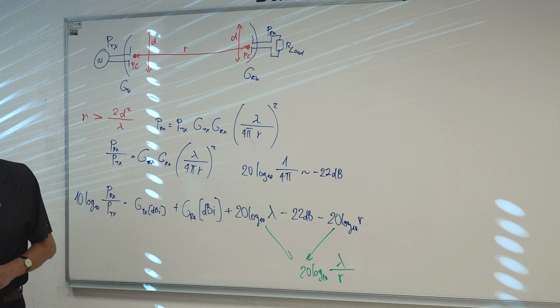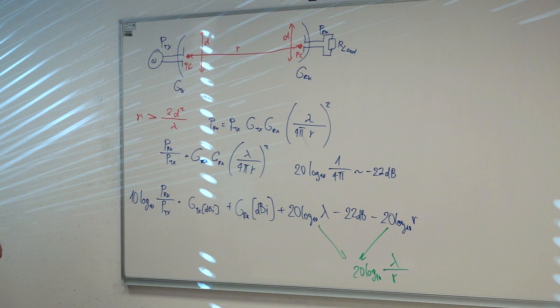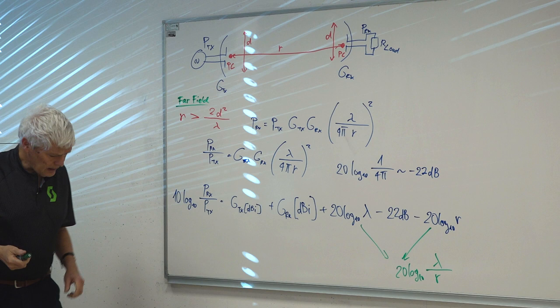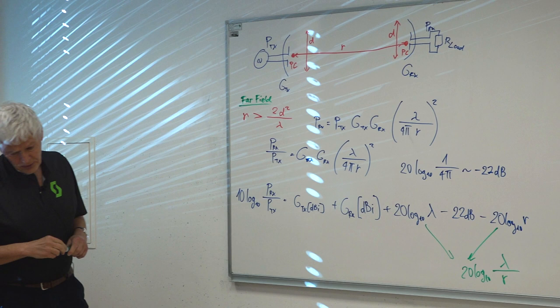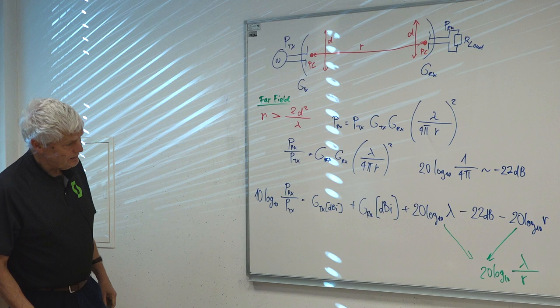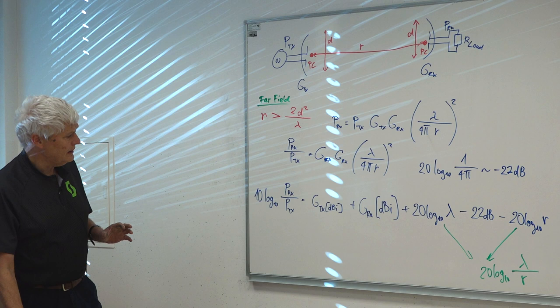We are only interested in the far field — the Friis equation only holds there. At distances shorter than the far field, we need different formulas for the Fresnel region, and closer still in the reactive near field, we have real trouble. There is yet another quantity I forgot to explain last time.